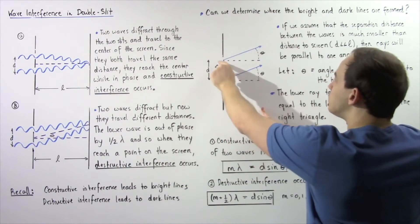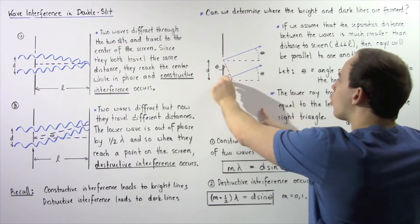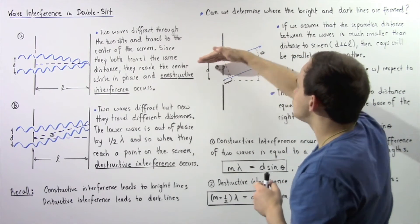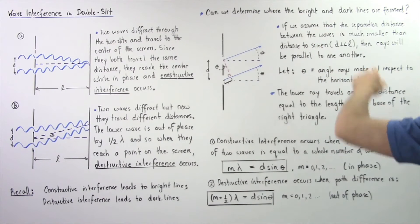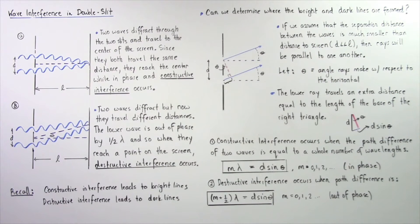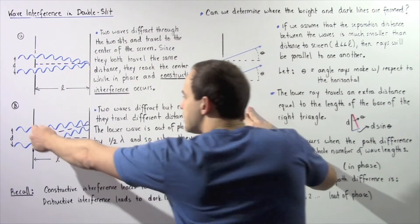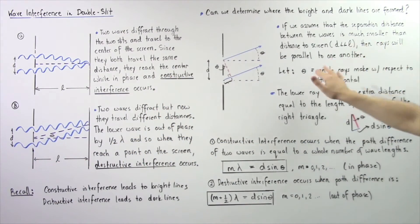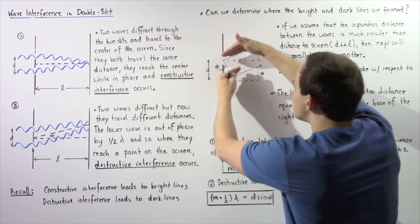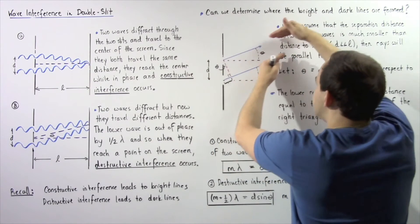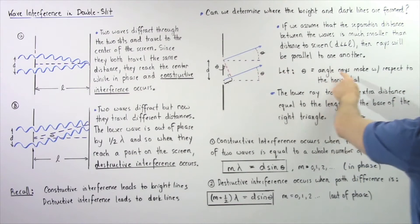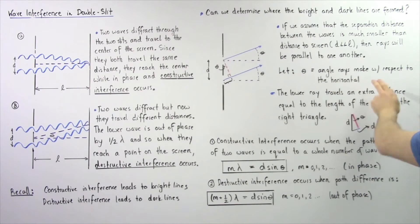The two purple dashed lines are our horizontal axis, along which our ray of light, shown in blue, essentially diffracts upward. If we assume that the separation distance d is much smaller than the distance to the screen L, then the rays of light will essentially be parallel with respect to one another when they diffract. The angle theta represents the angle that the ray makes with respect to the horizontal.